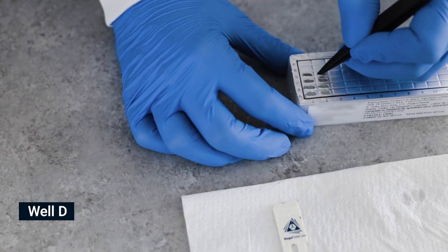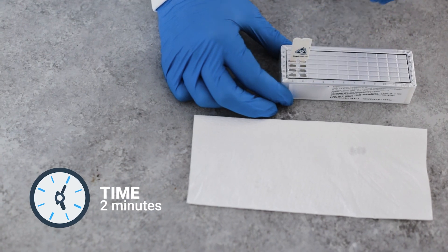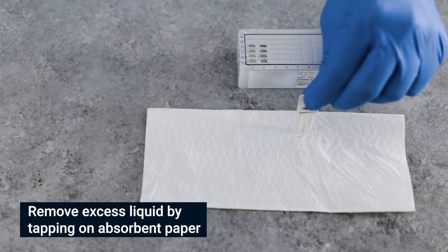Pierce the foil of the next wells in row D. Shake off excess liquid and insert the comb for 2 minutes. Move the teeth at least twice during this step, then remove excess liquid.